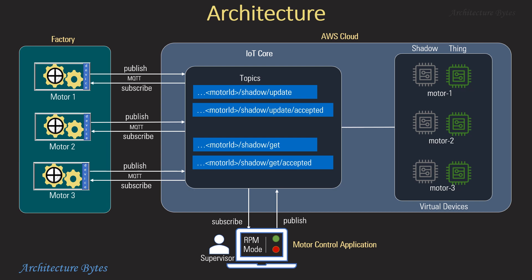Here's our architecture. We have three distinct high-level entities: the factory, AWS Cloud, and the motor control application. Motors are our IoT devices in the factory. In AWS Cloud, we have IoT Core, which is a MQTT message broker. Each IoT device is modeled as a virtual device called a Thing along with a corresponding Shadow. Shadow stores the state of the device. The factory supervisor uses the motor control application to manage the motors, and this application communicates with AWS Cloud IoT Core.